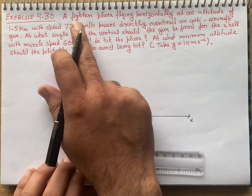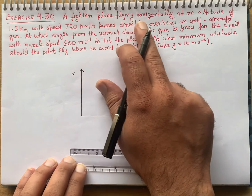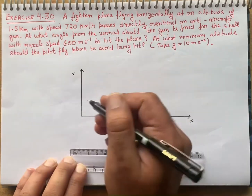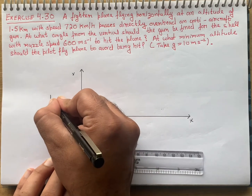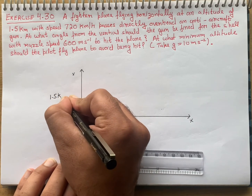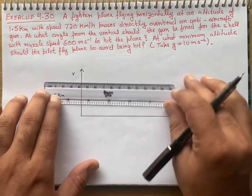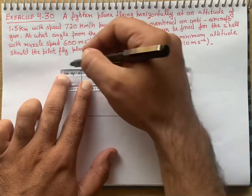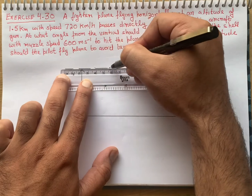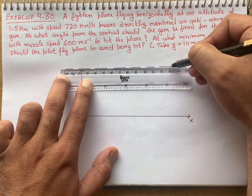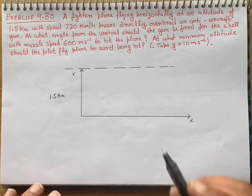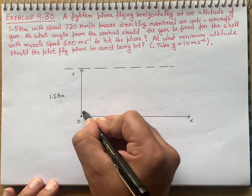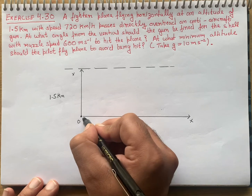According to the question, the fighter plane is flying horizontally at an altitude of 1.5 km from the ground, along this path. Let my point O be here, where I have an anti-aircraft gun.